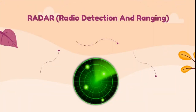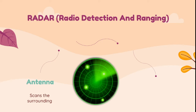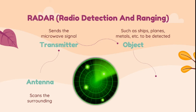Proceeding, we have the radar, or radio detection and ranging. The air traffic system relies on radar that uses microwave. It detects aircraft approaching or leaving the airport to avoid collisions and accidents. In a radar, an antenna is used to scan the surrounding. It will send the microwave signal using the transmitter. From the transmitter, objects like ships, planes, metal, etc. are detected. And lastly, a receiver detects the signal reflected back by the object.